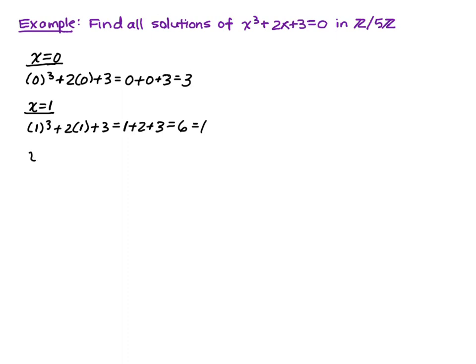Now we're going to try x equals 2, and we're going to get 2 cubed plus 2 times 2 plus 3, which is 8 plus 4 plus 3, equals 15, and 15 is divisible by 5, so it's going to be equal to 0. So we have found one solution.